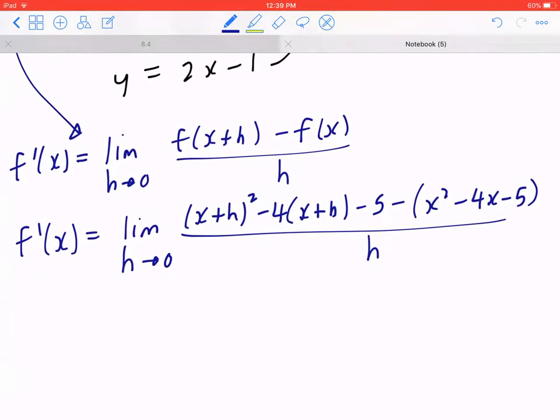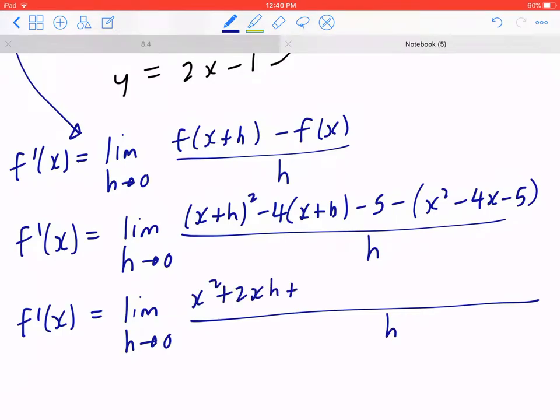Again, as you're doing this, you have one specific goal. h will divide by h, and when that happens, you're in the second last step of finding the general slope. When expanding the top, this will give you x squared plus 2 times x times h plus h squared minus 4x minus 4h minus 5 minus x squared plus 4x plus 5.